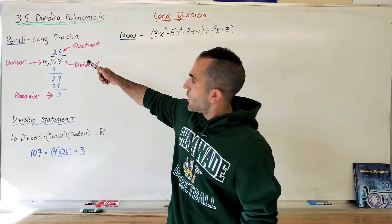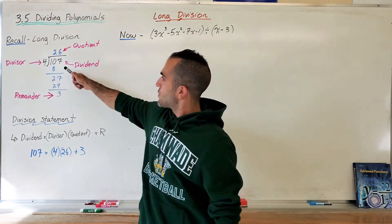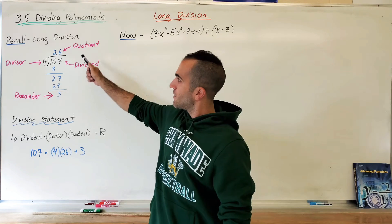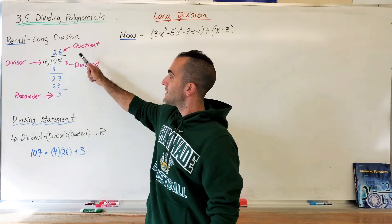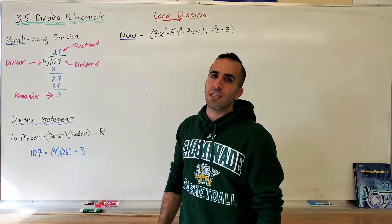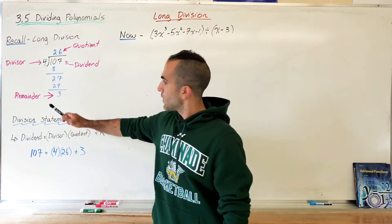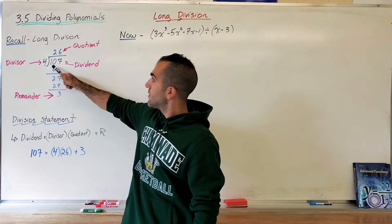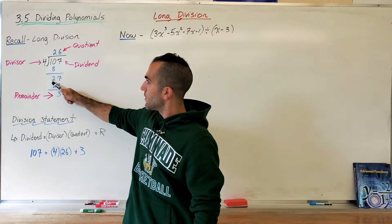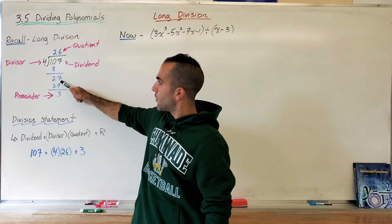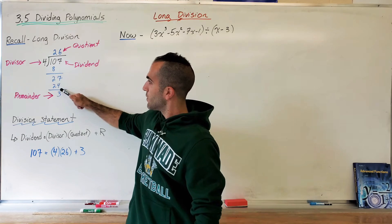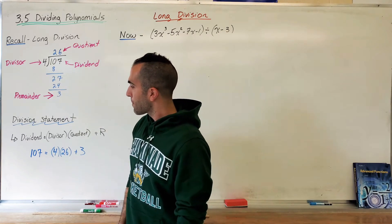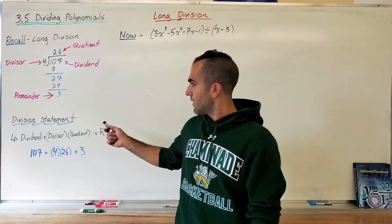Let's recall long division terminology. When we do 107 divided by 4, we call 107 the dividend, and what you're dividing by — 4 — is the divisor. 107 divided by 4 equals 26, which is the quotient. If 107 doesn't divide evenly by 4 you will have a remainder other than zero. We find what multiple of 4 goes into 10, choose 8, subtract to get 2, bring down the 7, find how many multiples of 4 go into 27 — six — giving 24, and the remainder is 3.